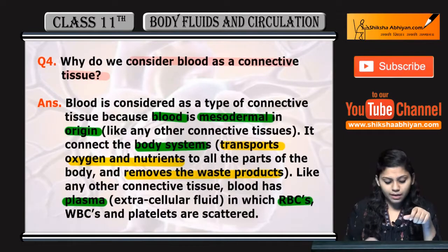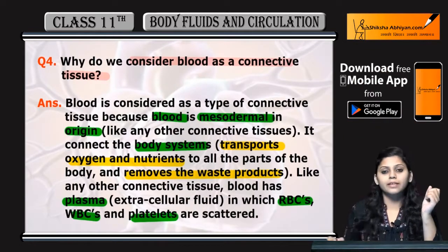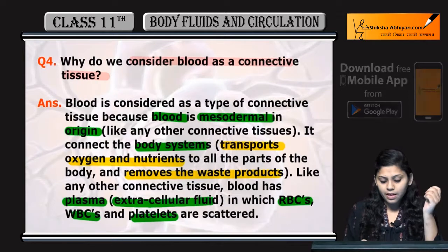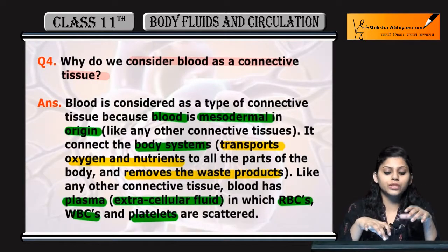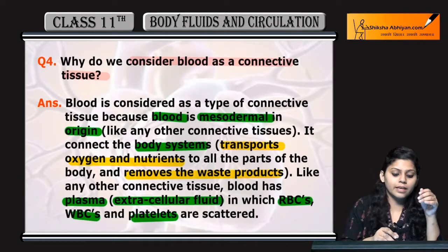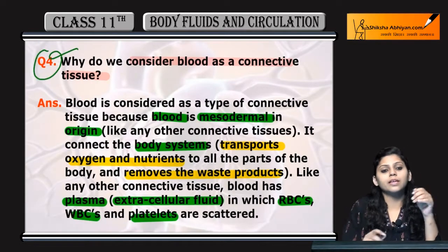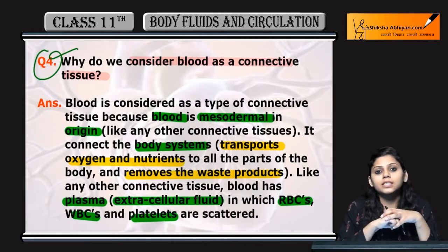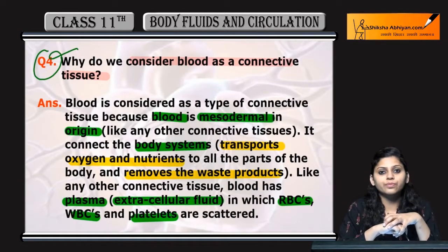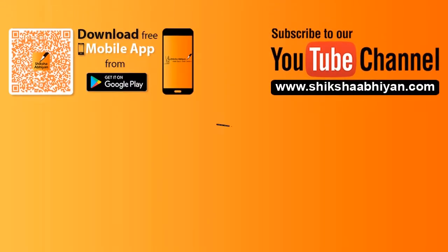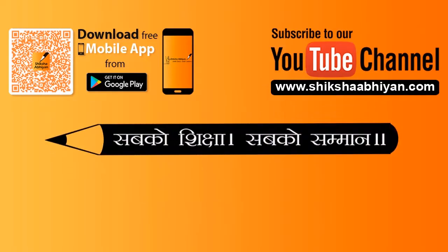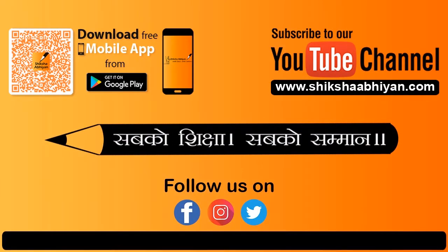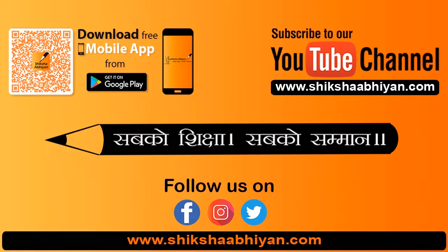The cells scattered in plasma include RBCs, WBCs, and platelets. Plasma acts as extracellular fluid. This is the reason that blood is considered a connective tissue.